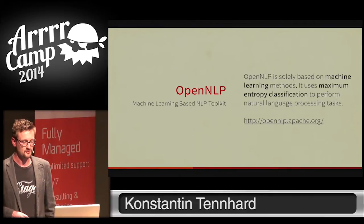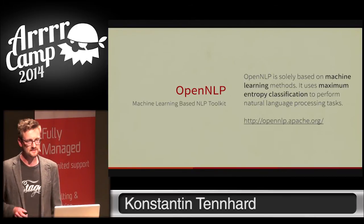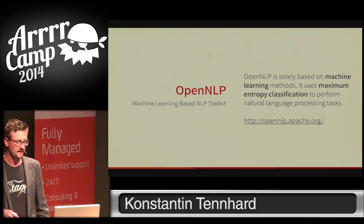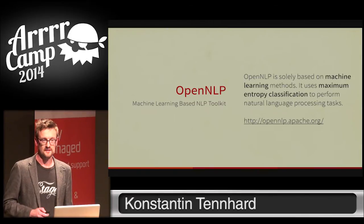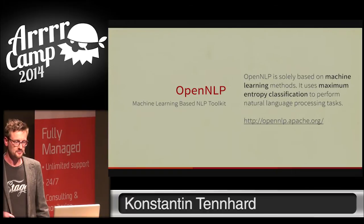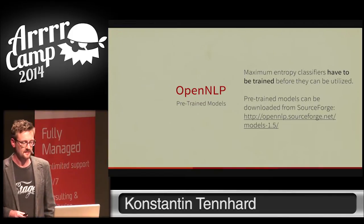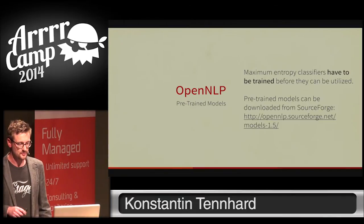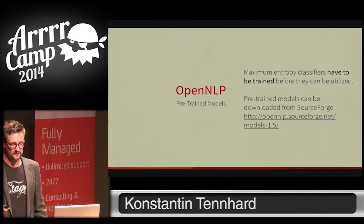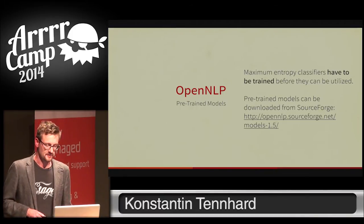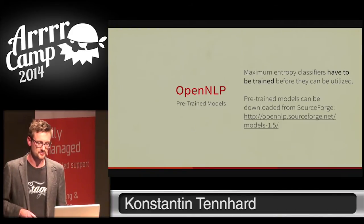One of the most prominent NLP libraries written in Java is OpenNLP, and it uses maximum entropy classification. These machine learning algorithms are supervised, meaning they need to be trained before you can apply them on input data. Finding annotated training data in linguistics is quite hard, but with OpenNLP we are lucky because they provide pre-trained models you can simply download from sourceforge.net.